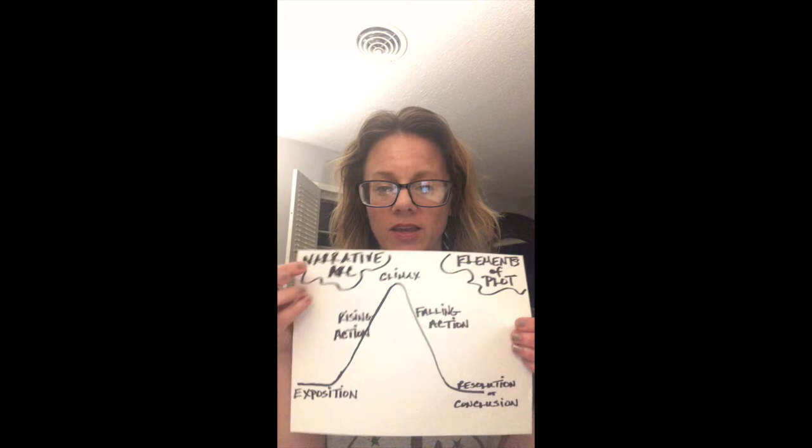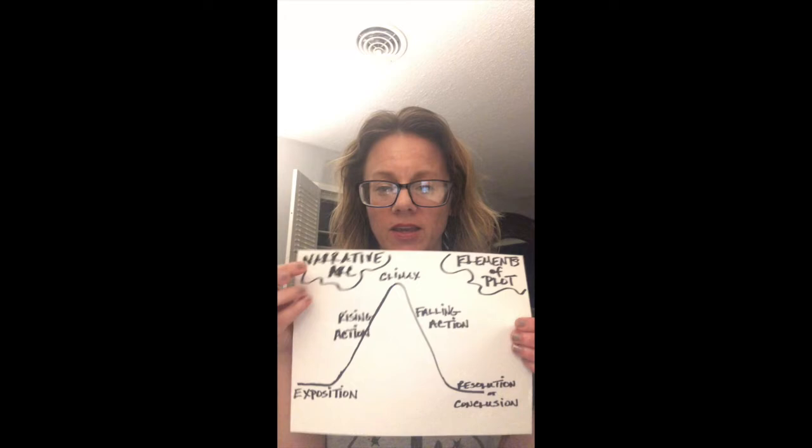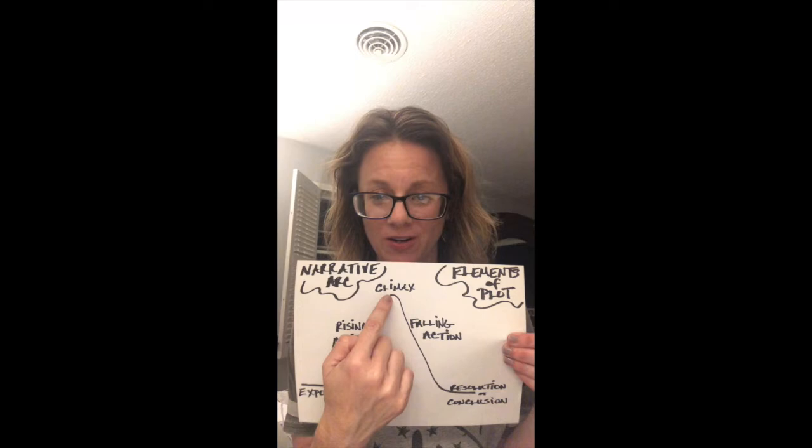Some teachers call it elements of plot. The poster shows: exposition, rising action, and we are here at the climax — in 'A Worn Path,' she's just come into the city, which answers the question we've been building toward.